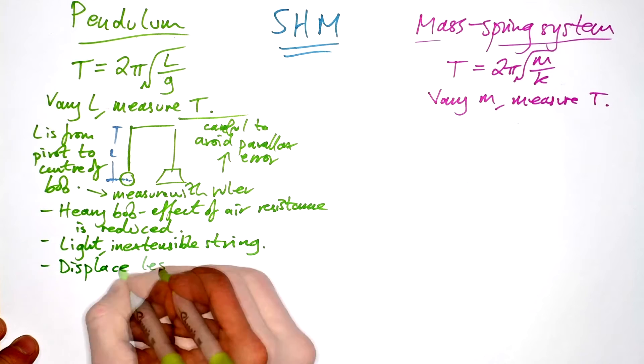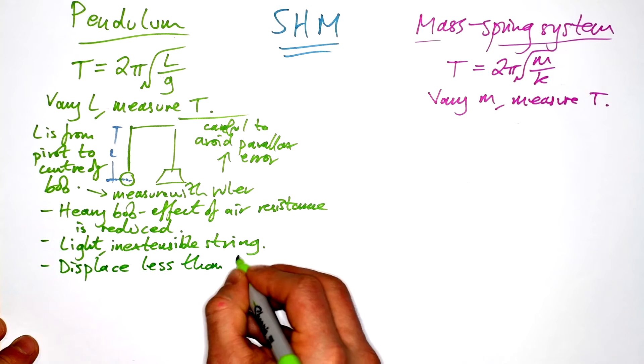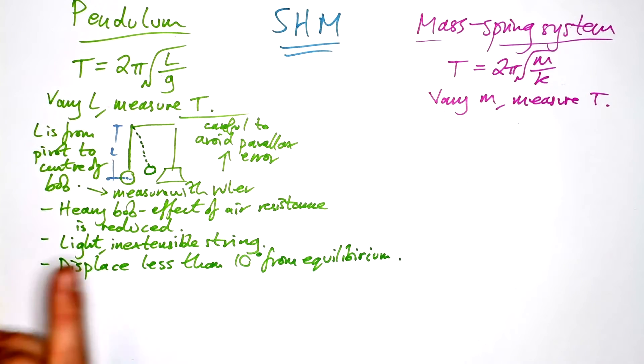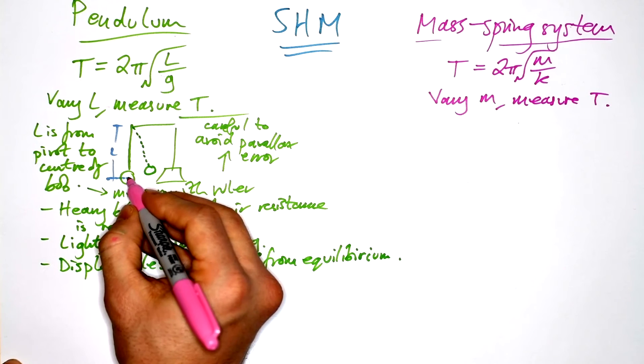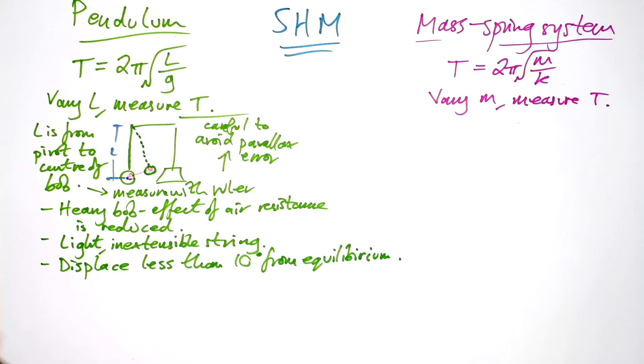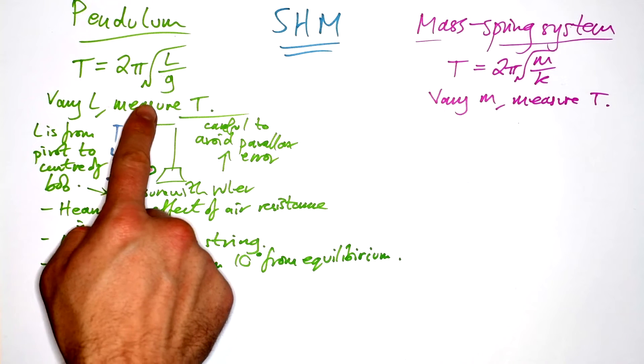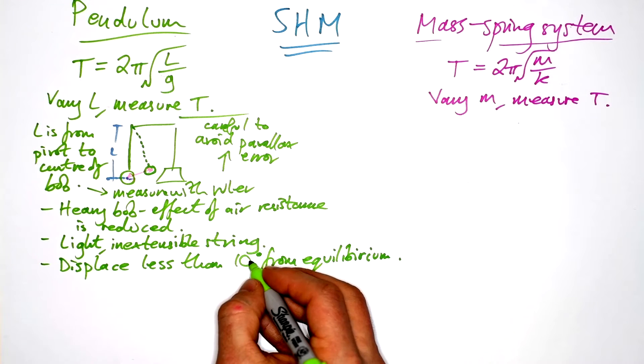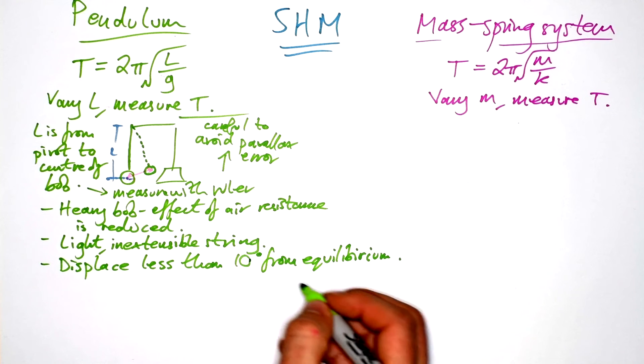We want to displace less than 10 degrees from equilibrium. Now what's the reason for that? Well, it's because this equation at the top here, this assumes that the path is a straight line, whereas we know that it's actually a curve. And so this equation is accurate for small angles, but it gets less and less accurate as you get bigger angles, because you end up getting further away from a straight line. So we arbitrarily say 10 degrees.